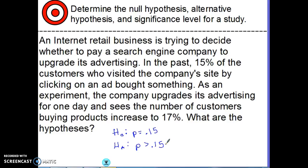Notice that I never brought the 17% into the hypothesis statements — that is correct. We always refer to the null hypothesis when we form the alternative hypothesis. I used the 17% just to know I was looking to see if advertising got greater, which is why I used the greater-than symbol. But I'm always looking for the population parameter to become bigger or smaller as compared to the original H-naught.